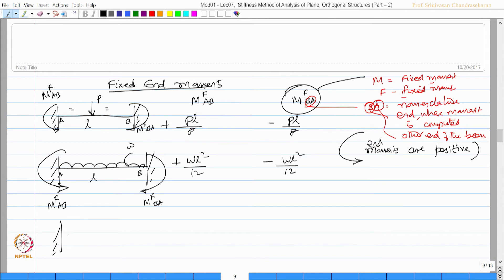A fixed beam under a concentrated load but eccentric. P, this is A and this is B. This will be again M_F^AB, this will be M_F^BA. M_F^AB will be plus P·a·b²/L², this will be minus P·b·a²/L².